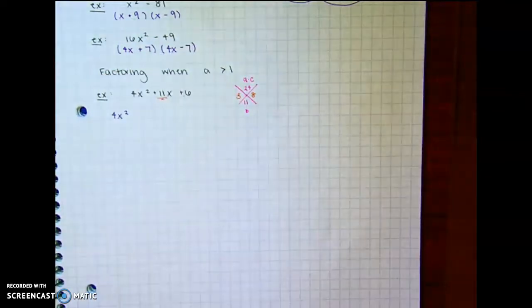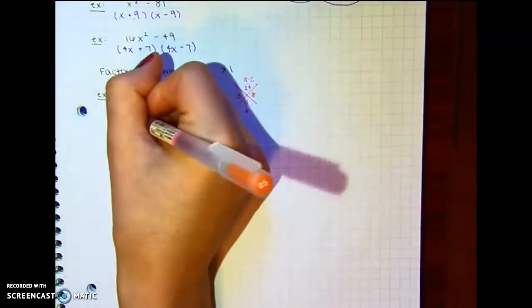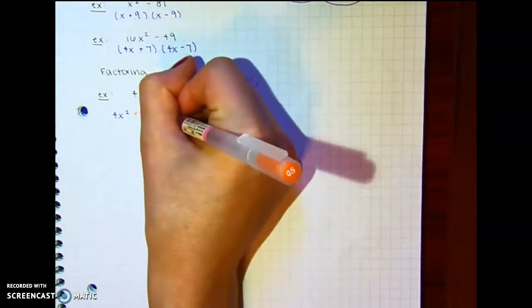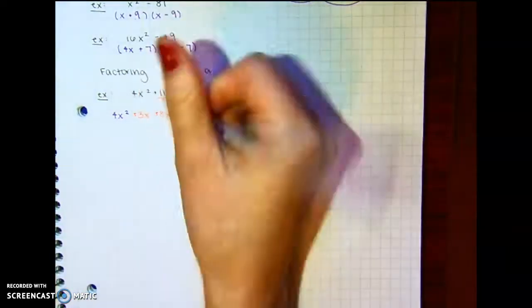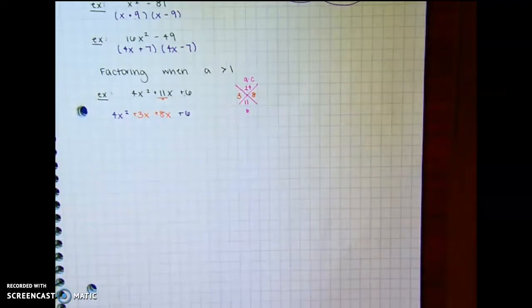So 4x squared plus 3x plus 8x, and that order doesn't matter, and then plus 6. And now we're going to focus on the 2 groups, again, just like I taught you in our last video.